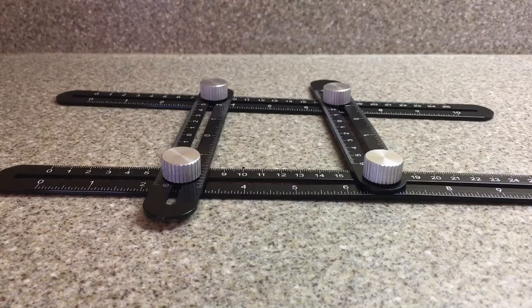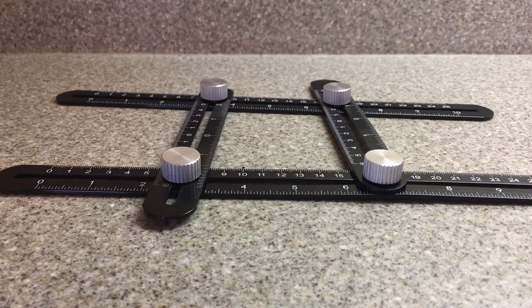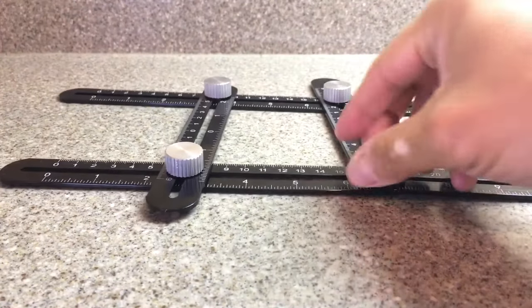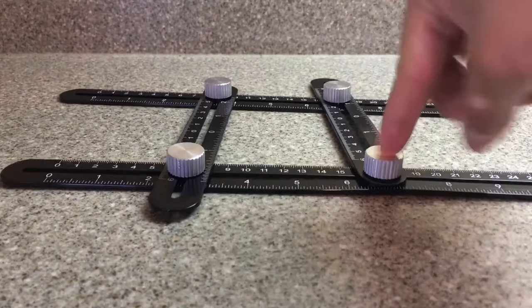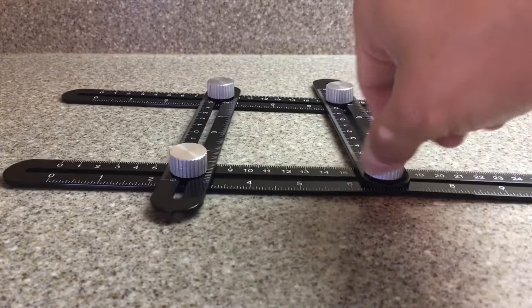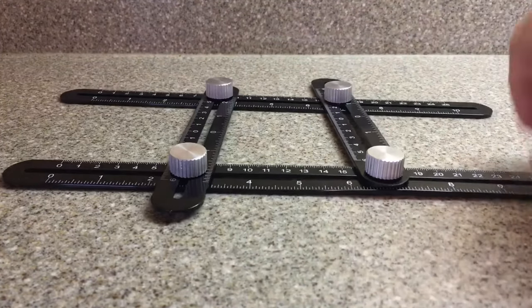So this angular ruler features, I believe, aluminum sockets or whatever you call these. These are aluminum. These seem like they're steel.